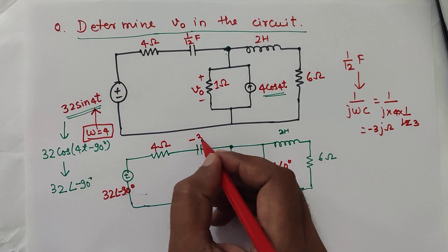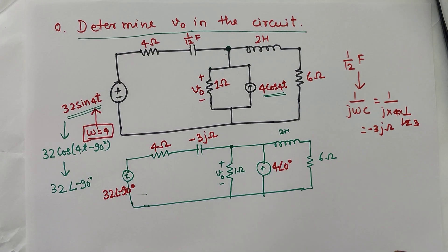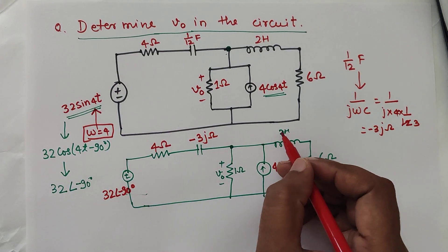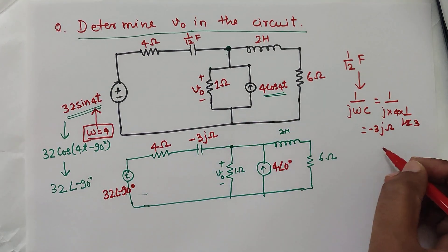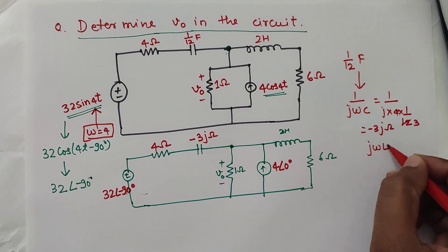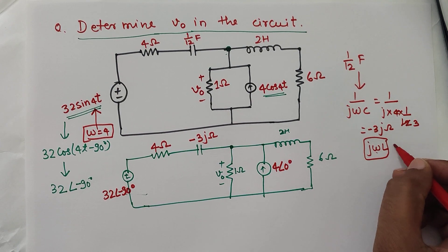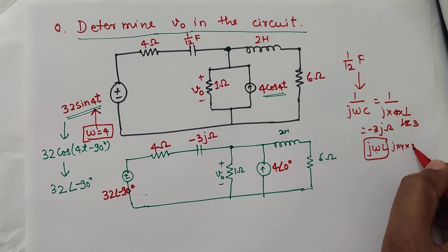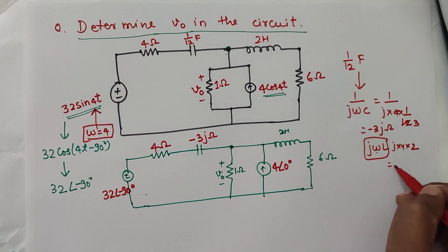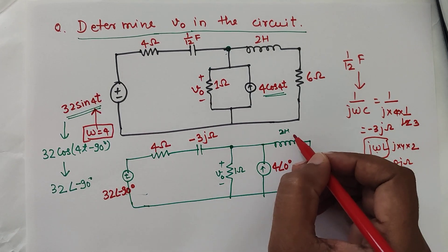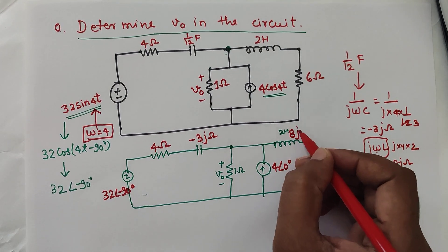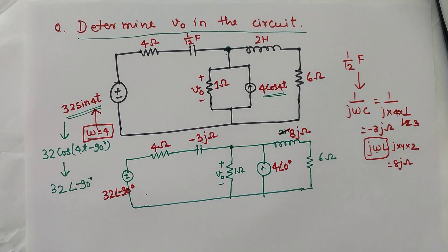We can write minus 3j ohm for this. Similarly, for 2 henry, we can directly take j omega L. So j into omega, omega is 4, j into 4 into 2, so it will become 8j ohm. So we can write 8j ohm in place of 2 henry.